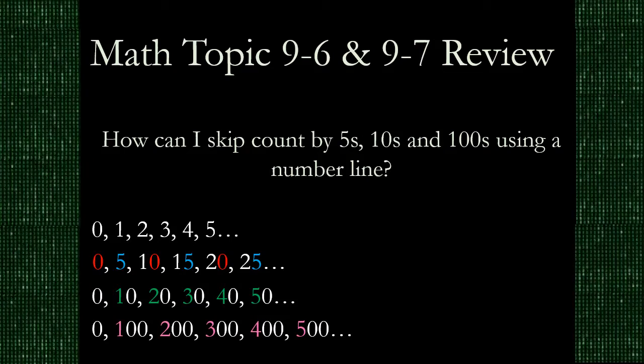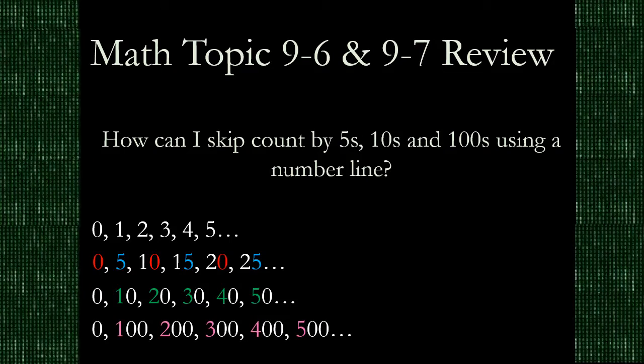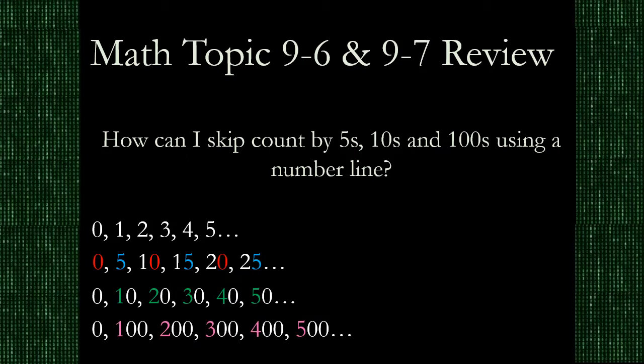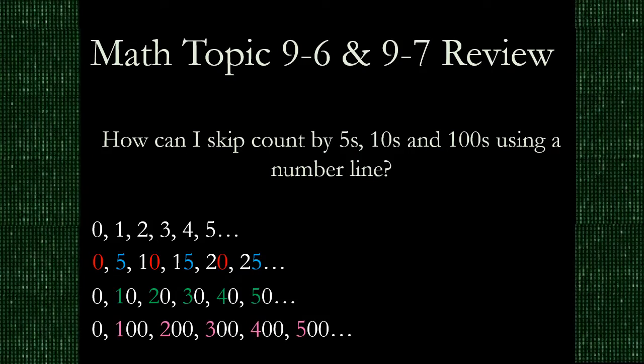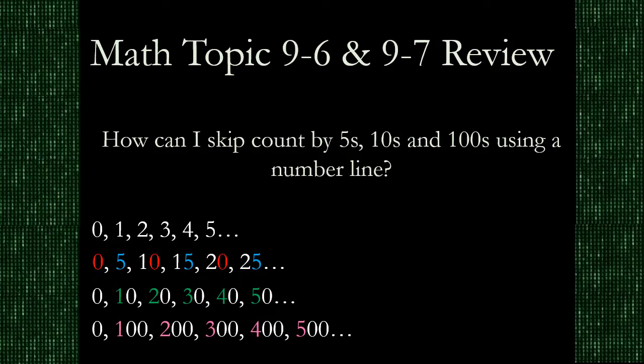The same thing happens when we count by hundreds. Look at those pink numbers—we're actually skip counting by a hundred there, and we can go much more quickly that way.